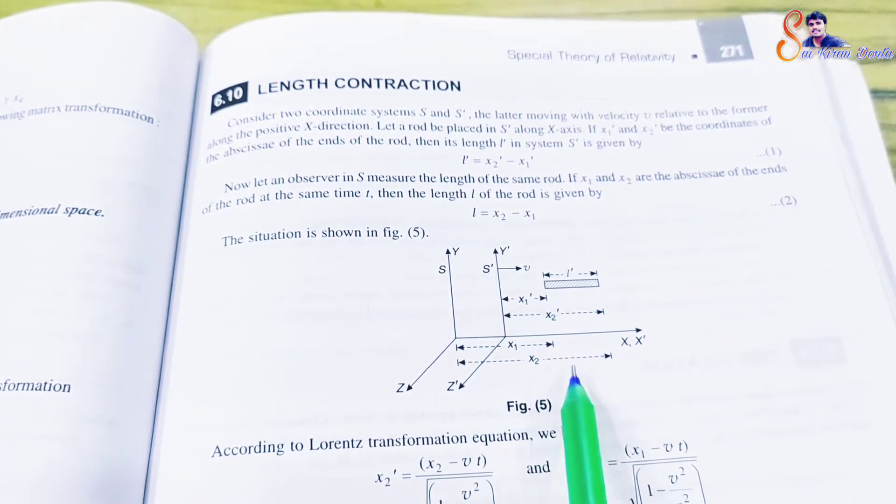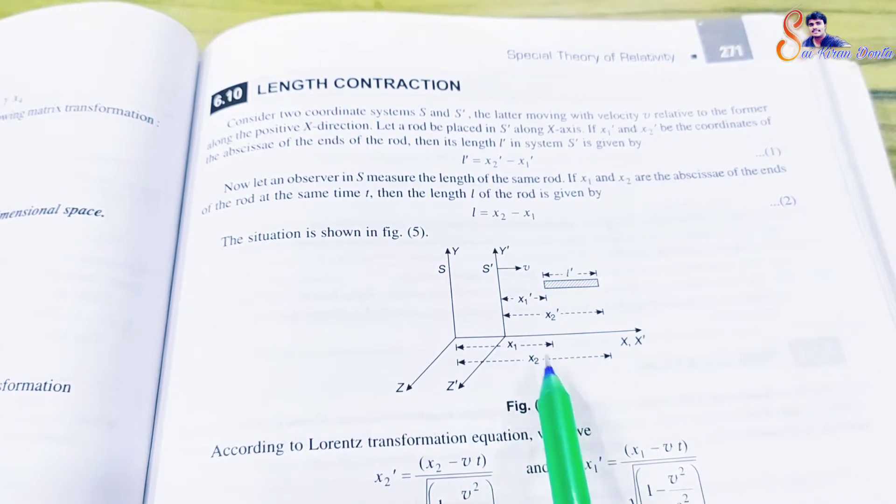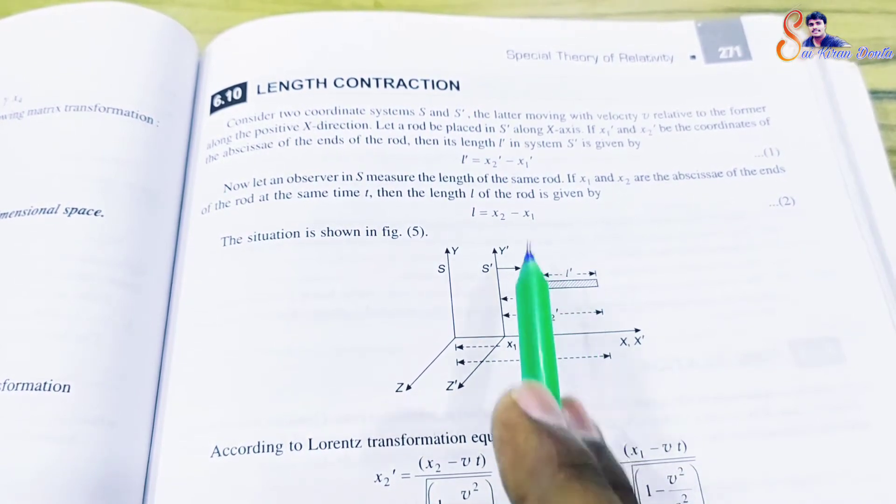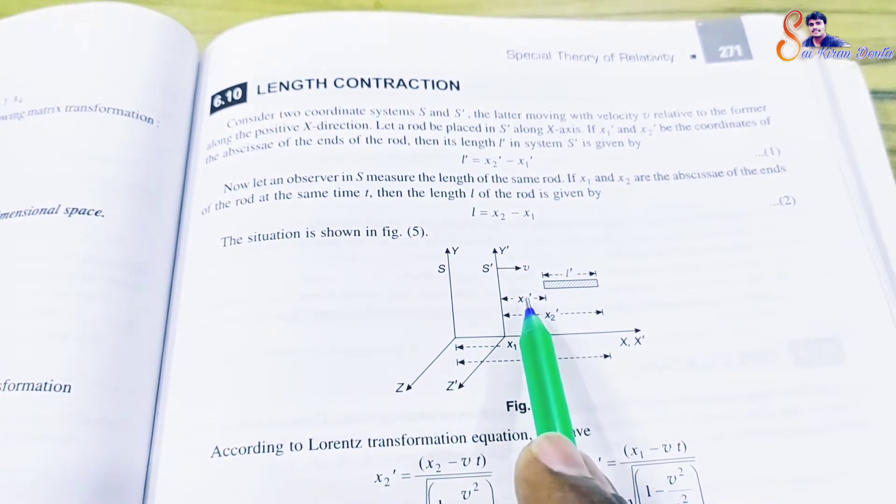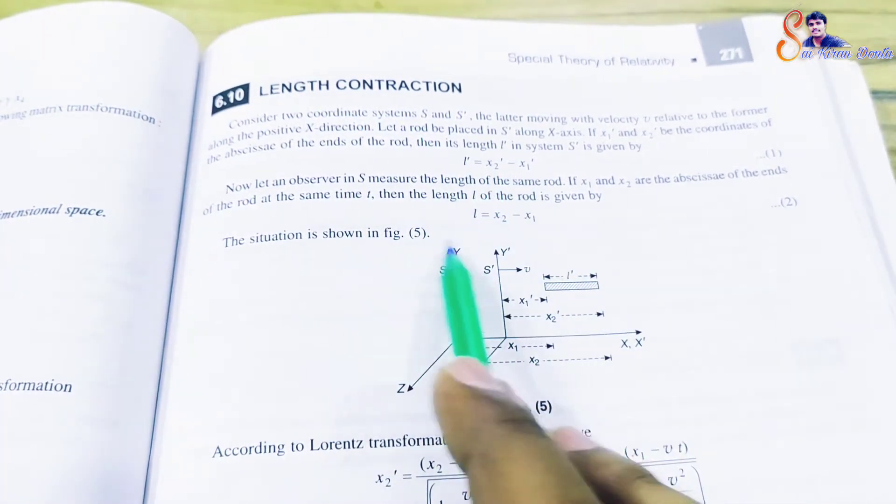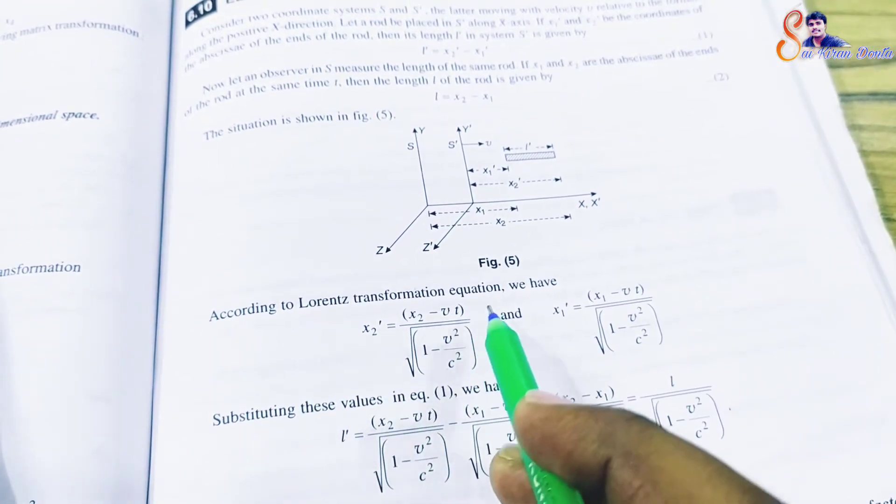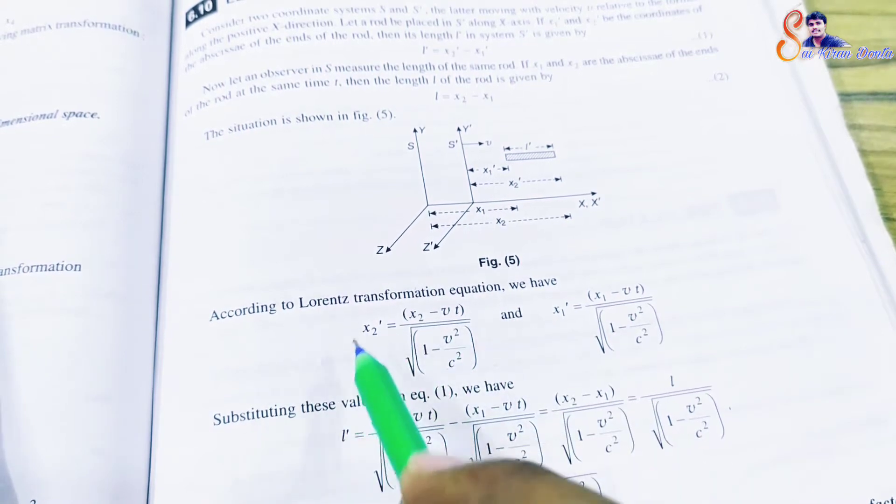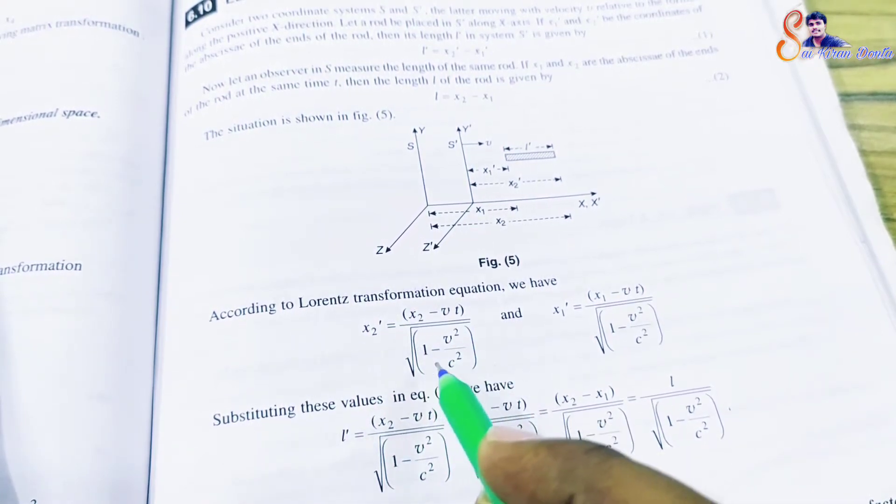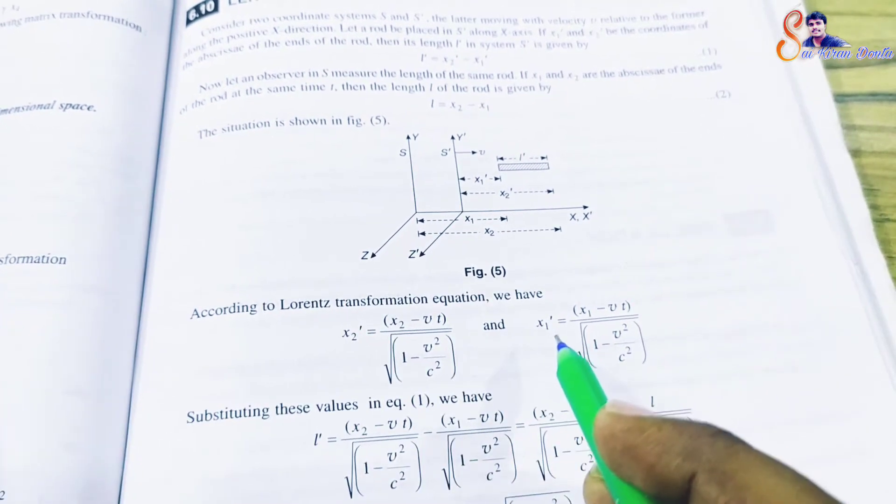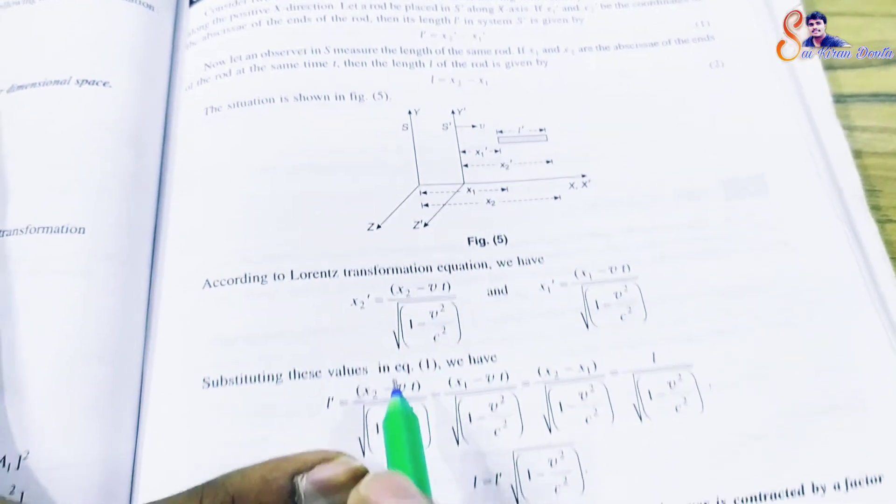According to Lorentz transformation, x2 dash equals x2 minus vt divided by square root of 1 minus v squared by c squared, and x1 dash equals x1 minus vt divided by square root of 1 minus v squared by c squared.